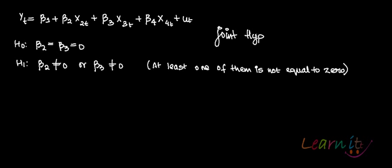Why do we want to do this? In our model we want to test whether these coefficients, or whether these variables, are significant or not — are they significantly adding anything to the model or not. In case they are not adding, then what is the use of keeping them in the model. So our null hypothesis is that beta 2 equals beta 3 equals 0. Our alternative hypothesis is that either of them is not equal to 0. So if both of them, or at least one of them, is not equal to 0, you can reject your null hypothesis that both of them are insignificant.